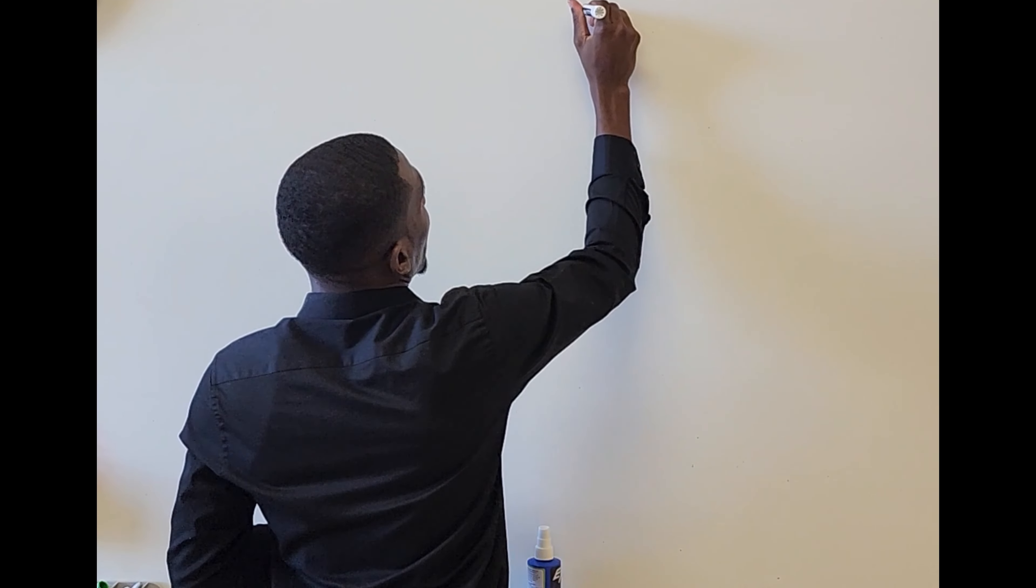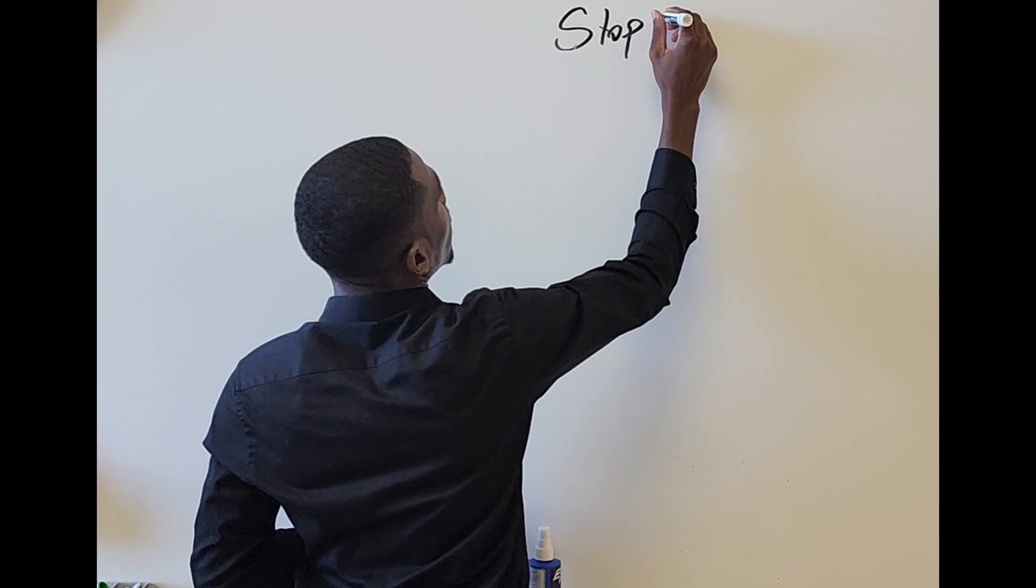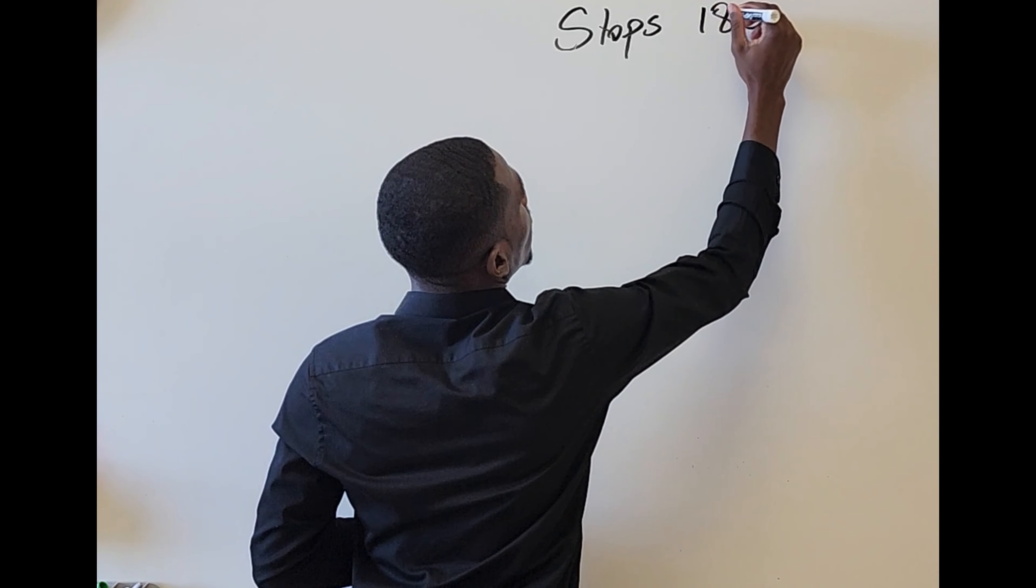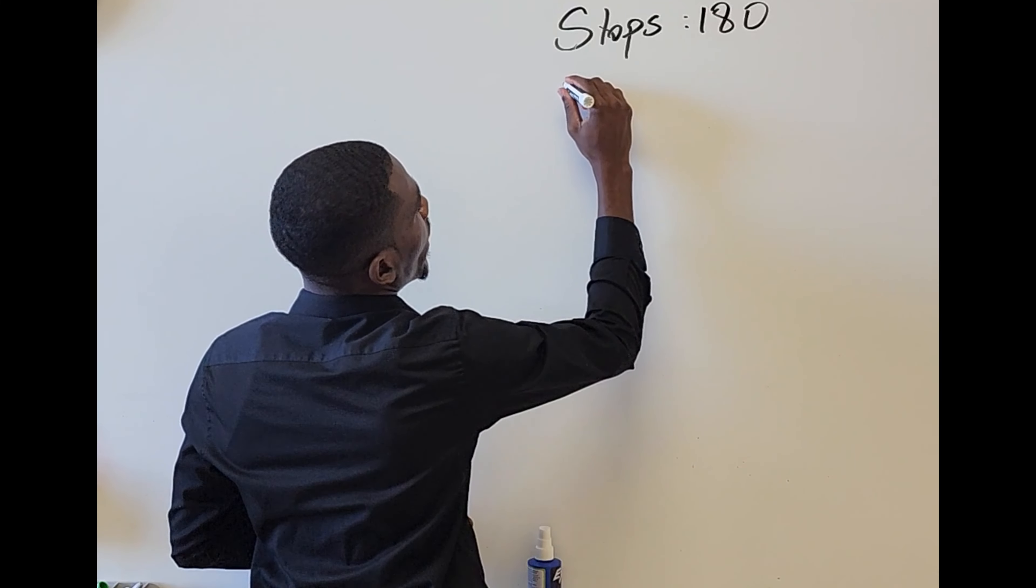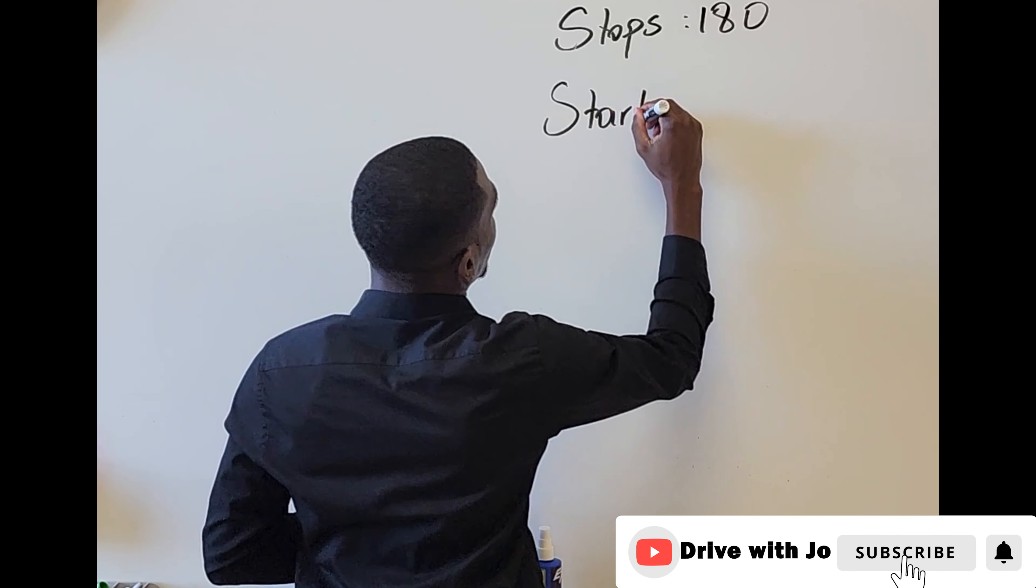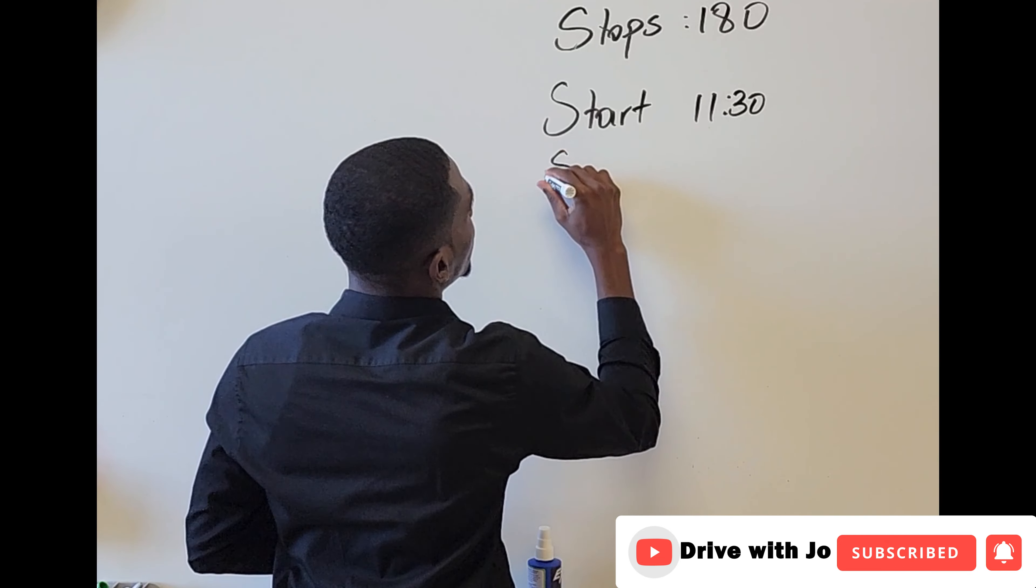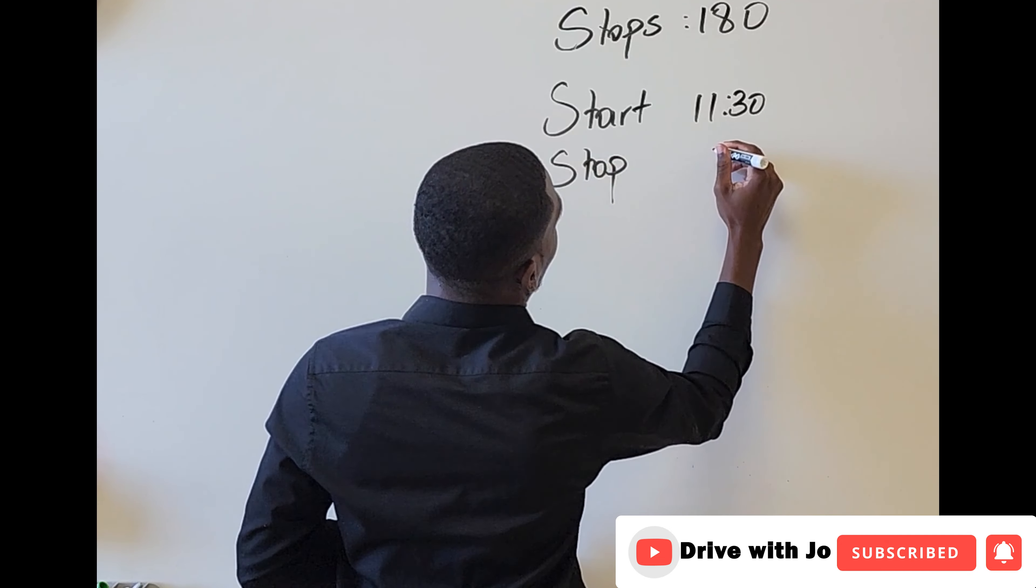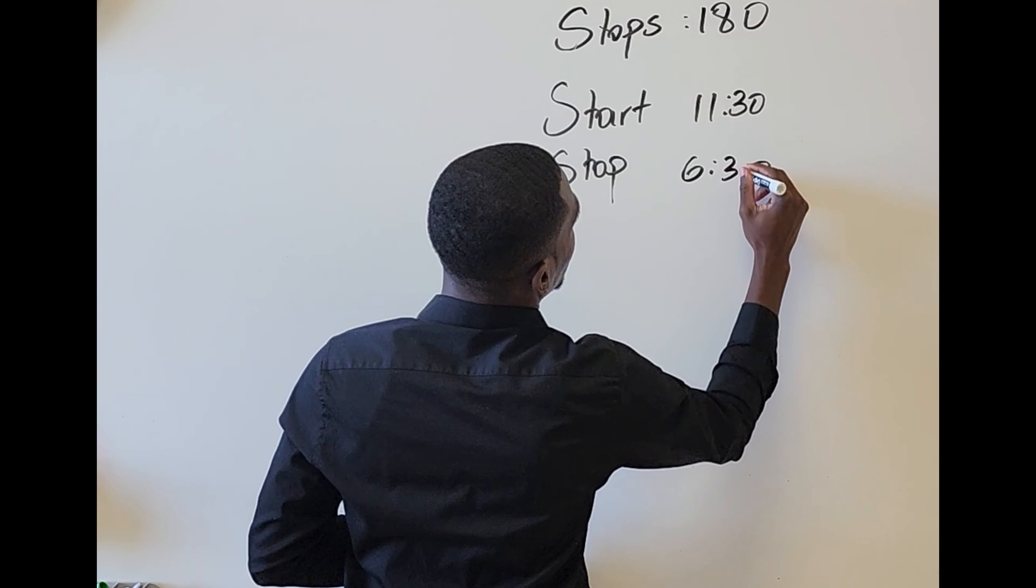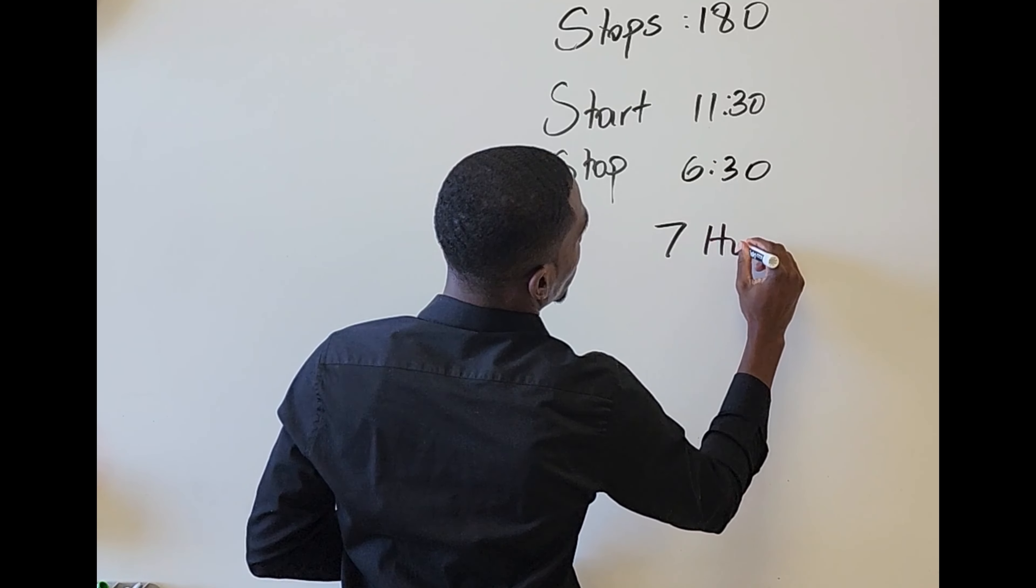So let's say I have 180 stops today and I start delivering packages at 11:30 and then I want to finish delivering by 6:30 or I stop delivering at 6:30. So from 11:30 to 6:30, that's 7 hours.